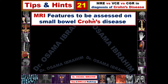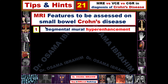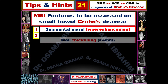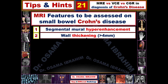The MRI features that should be assessed in small bowel Crohn's disease: the first is segmental mural hyperenhancement, which is the most common finding on MRI for diagnosing Crohn's disease. Bowel wall thickening is also a very important finding; small bowel wall thickening greater than 4 mm is considered abnormal, and the increasing thickness can be used to determine the severity of the disease.